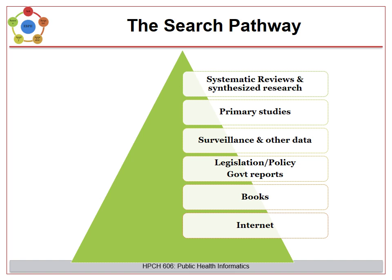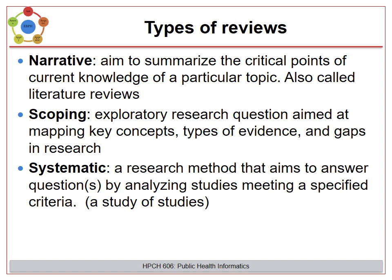Let's start by looking at systematic reviews. There are three main types of reviews: narrative, scoping, and systematic. Narrative reviews are commonly written to summarize the critical points on a particular topic, and are also referred to as literature reviews. Systematic reviews are a study of studies — a research method that aims to answer a question by analyzing studies which meet specified criteria.